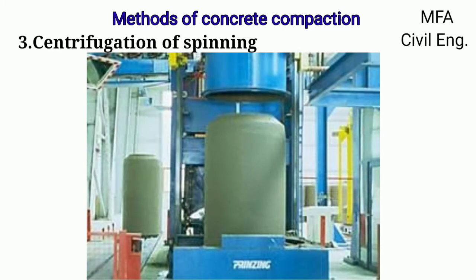The centrifugation or spinning method is not used on site. In this method, the concrete is subjected to high-speed spinning so that the centrifugal force achieves the compaction. This method is used for compaction of precast concrete parts in precast factories.